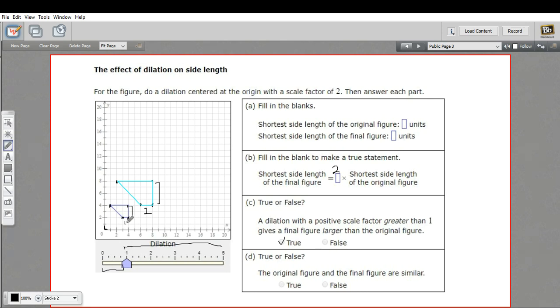And then D says true or false: the original figure and the final figure are similar. That is going to be true. All of the sides are the same proportion bigger, so these figures are similar. So that is a little bit of work with the effect of dilation on side length.